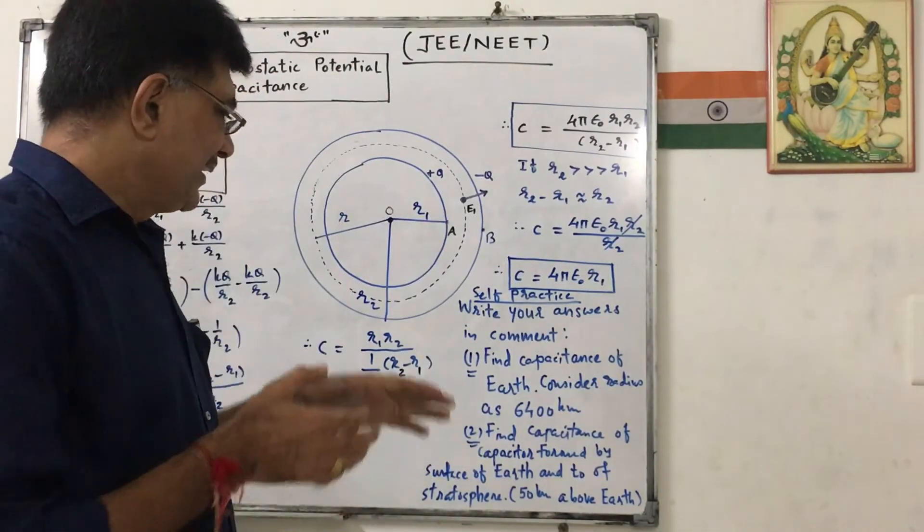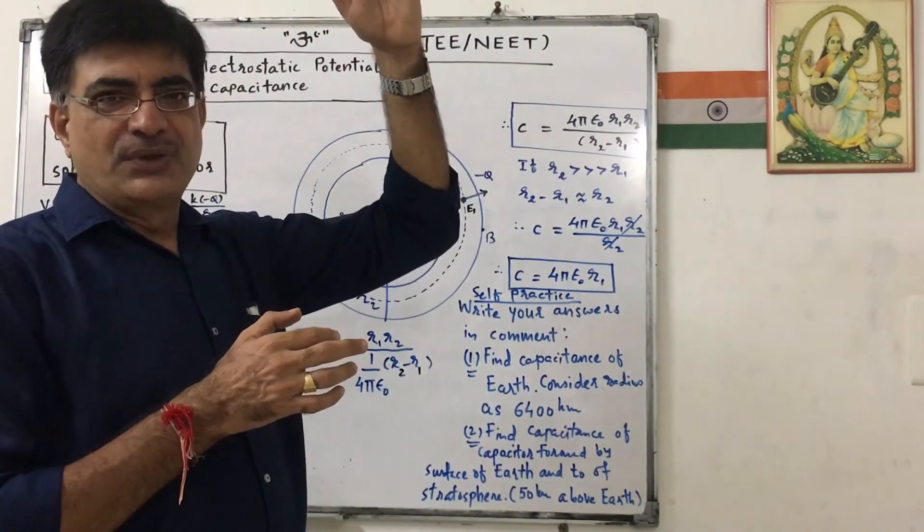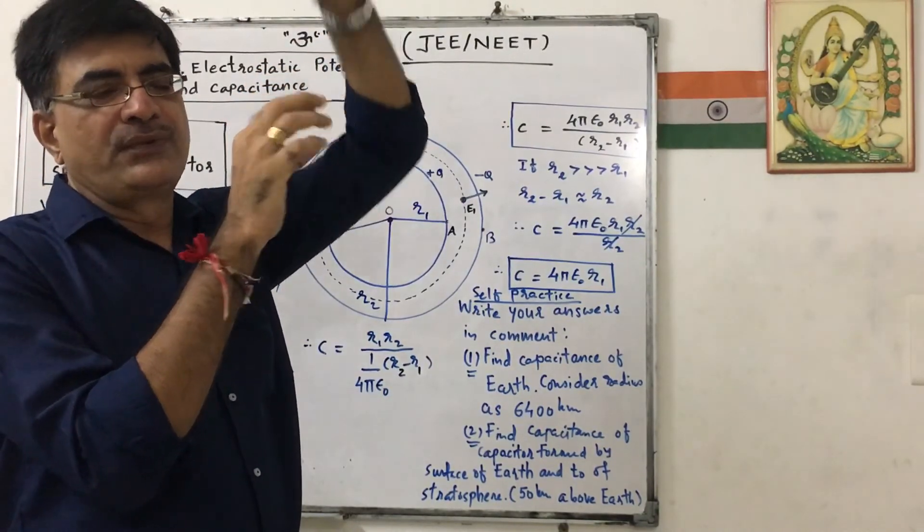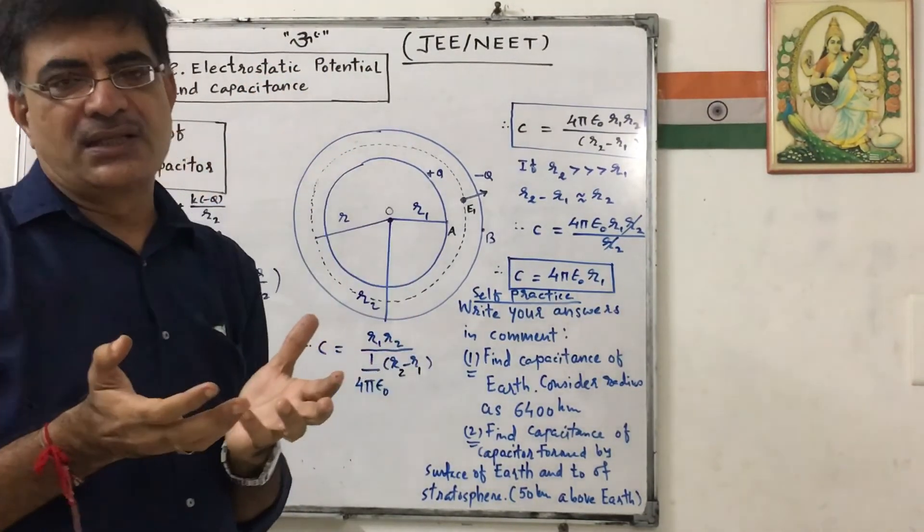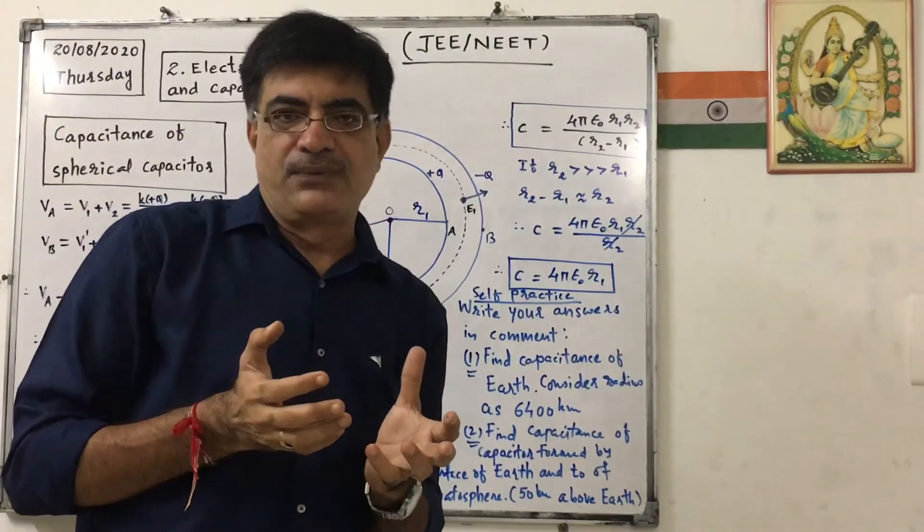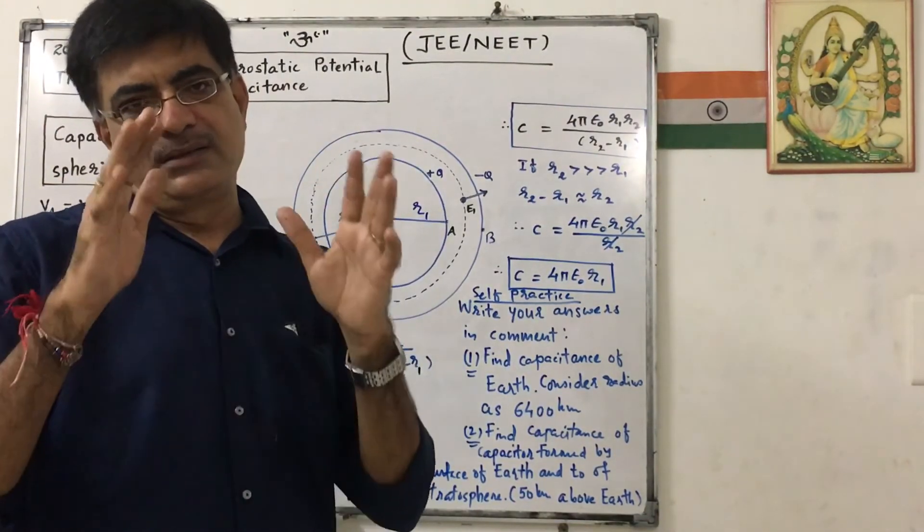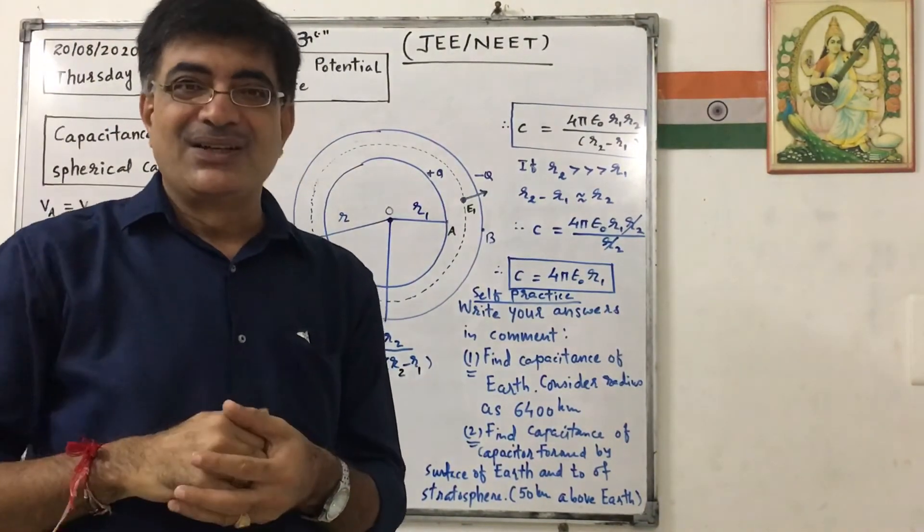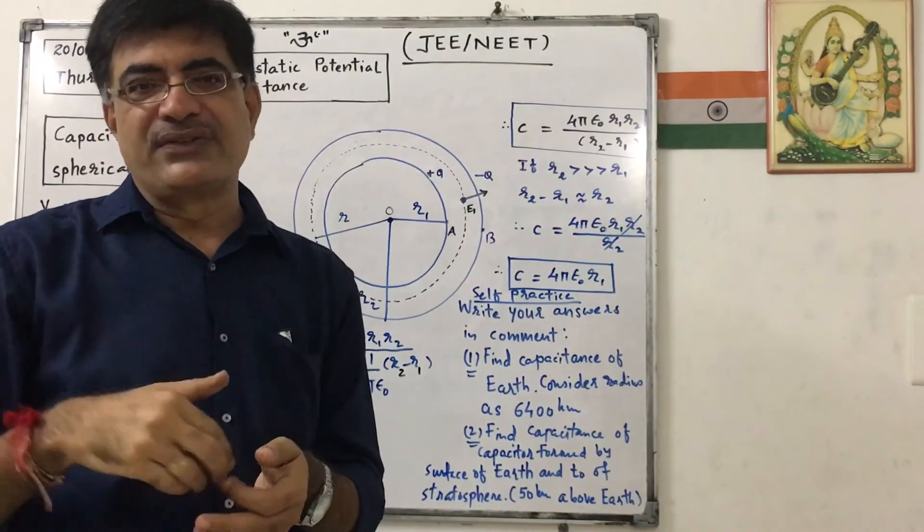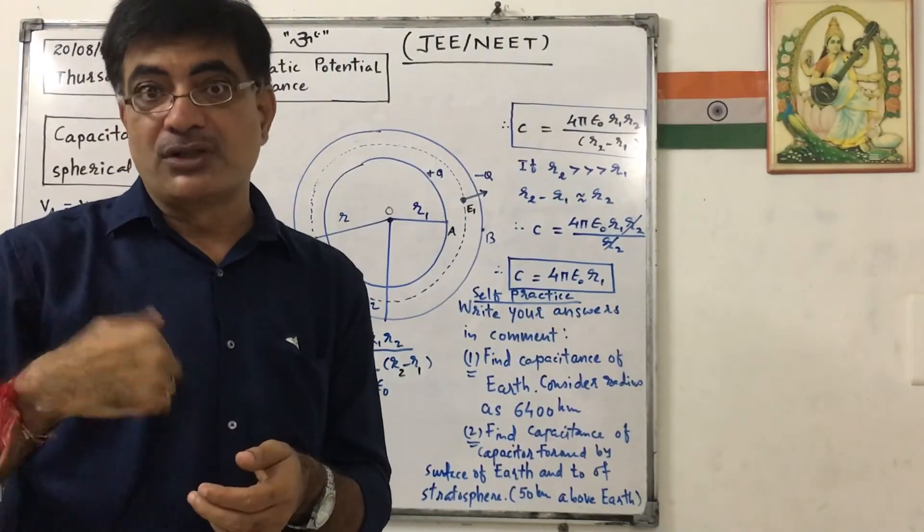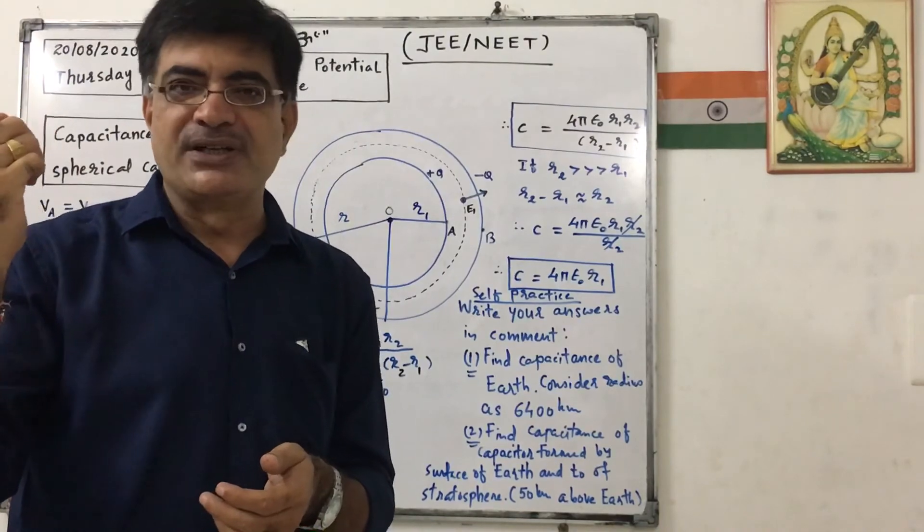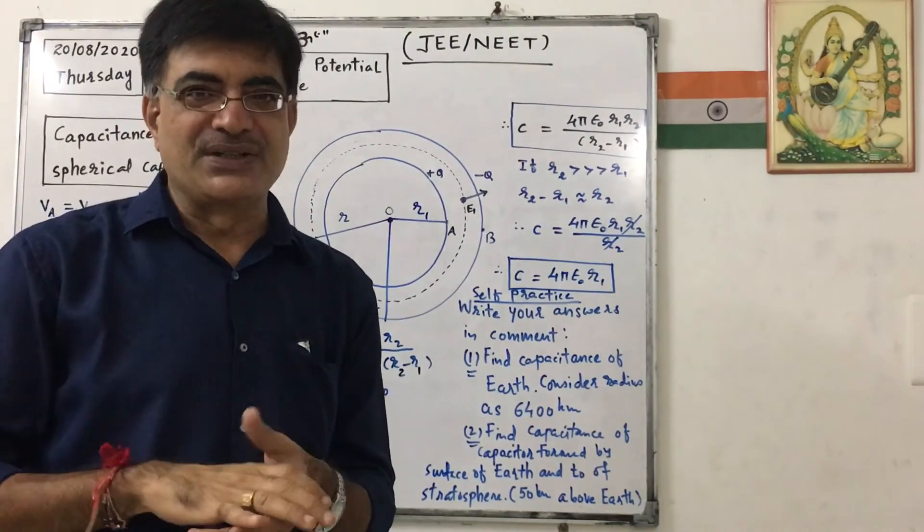Then we know that there is a stratosphere, it is extended up to 50 kilometer height from the Earth. So we can consider another spherical capacitor formed by the surface of the Earth and end of the stratosphere. So we have to consider R1 as 6400 kilometer, then we have to convert it to meter, and other as 6400 plus 50 kilometer, and we can find out capacitance.